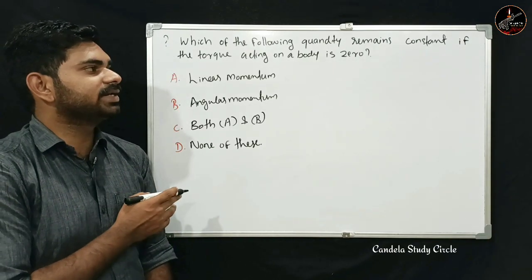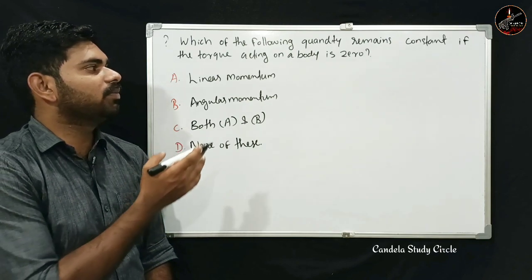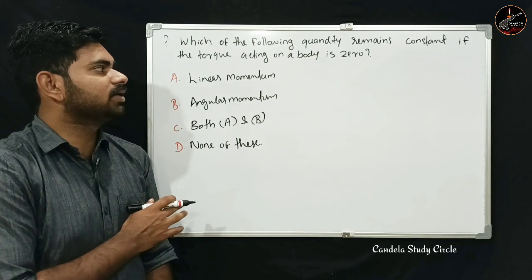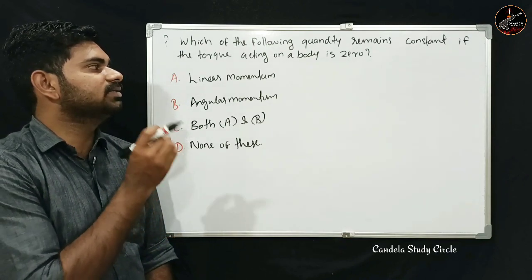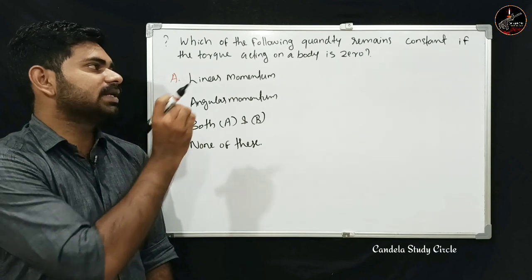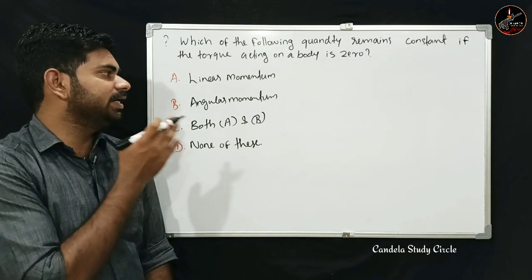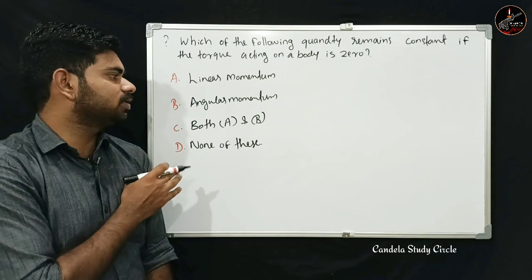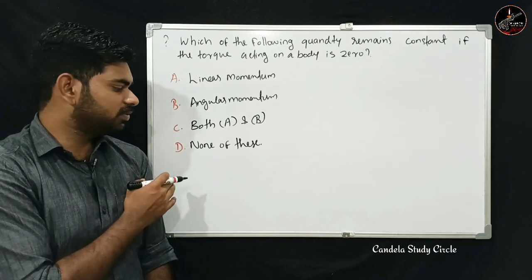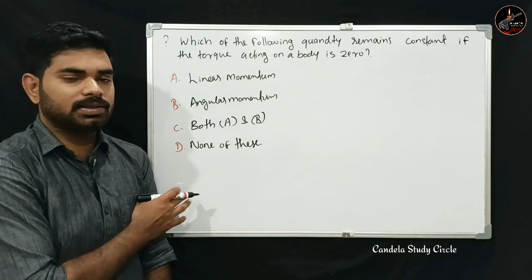Which of the following quantities remains constant if the torque acting on a body is zero? Option A: linear momentum. Option B: angular momentum. Option C: both A and B. Option D: none of these. If torque is zero, angular momentum remains constant. Option B is correct.